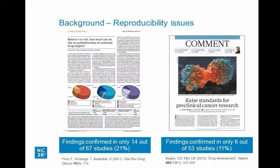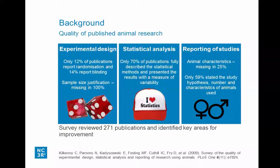In Amgen's case, they were actually in contact with investigators and sometimes tried to reproduce findings in the same labs where the original results were obtained, and still could not reproduce them. There is obviously a massive problem, and many factors contribute, but experimental design and reporting have been flagged as major concerns.